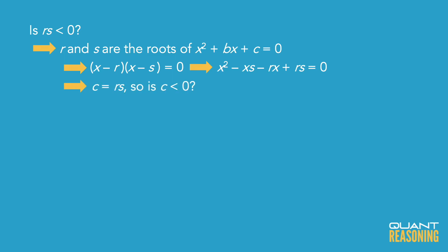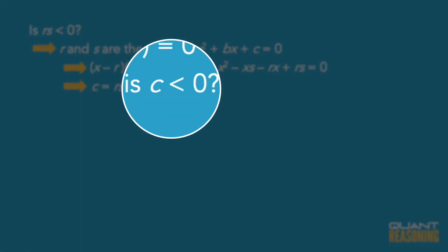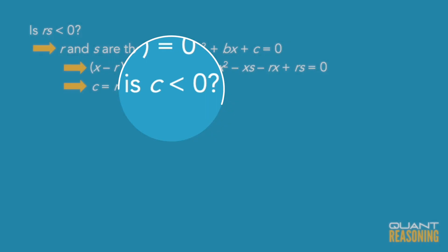So when they ask us, is rs negative? They're really just asking, is c negative? Evaluating the statements at this point is probably going to be fairly easy, and we should do that right after the intro.